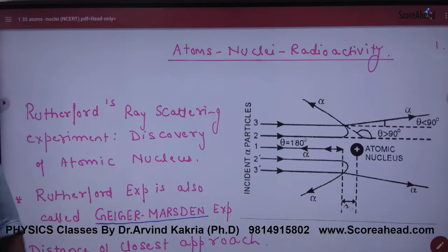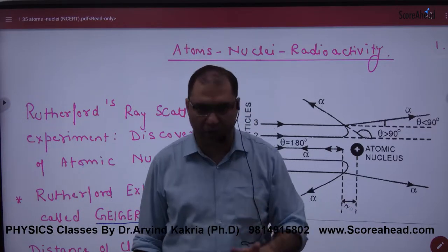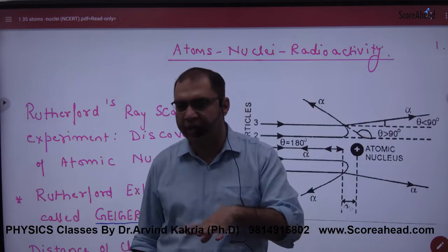Atom, Nucleus and Radioactivity. The first model that came to the atom was Thomson's model. In Thomson's model, it was believed that plus and minus charges were equally distributed, which was the wrong model.